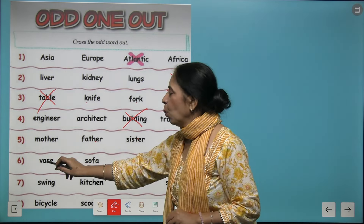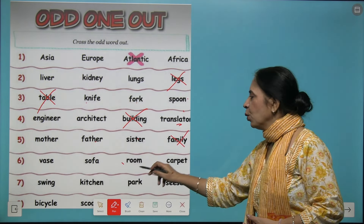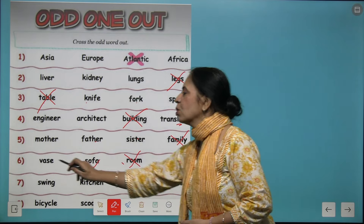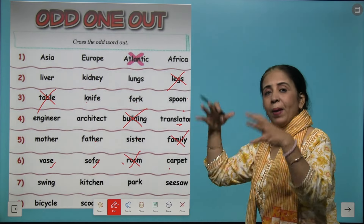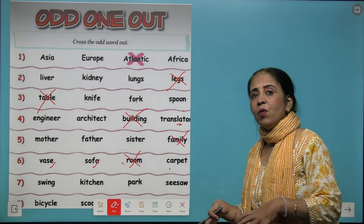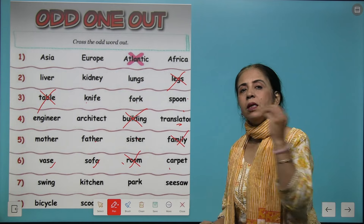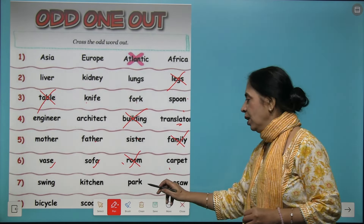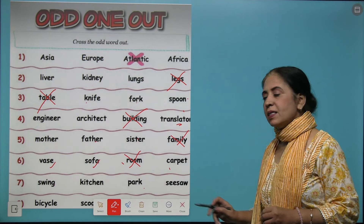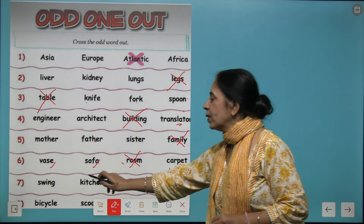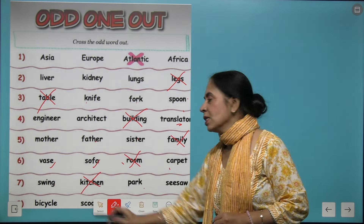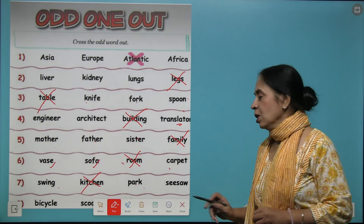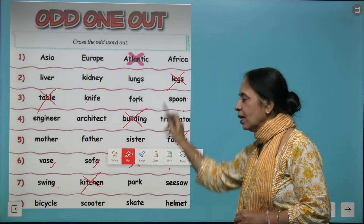Next one is sofa, room, and carpet. All three items — sofa, waste, and carpet — are placed in a room, so room is the odd one out. Next: swing, kitchen, park, and seesaw. Kitchen is inside the house while swing, park, and seesaw are all outside the house, so we pick out the kitchen.